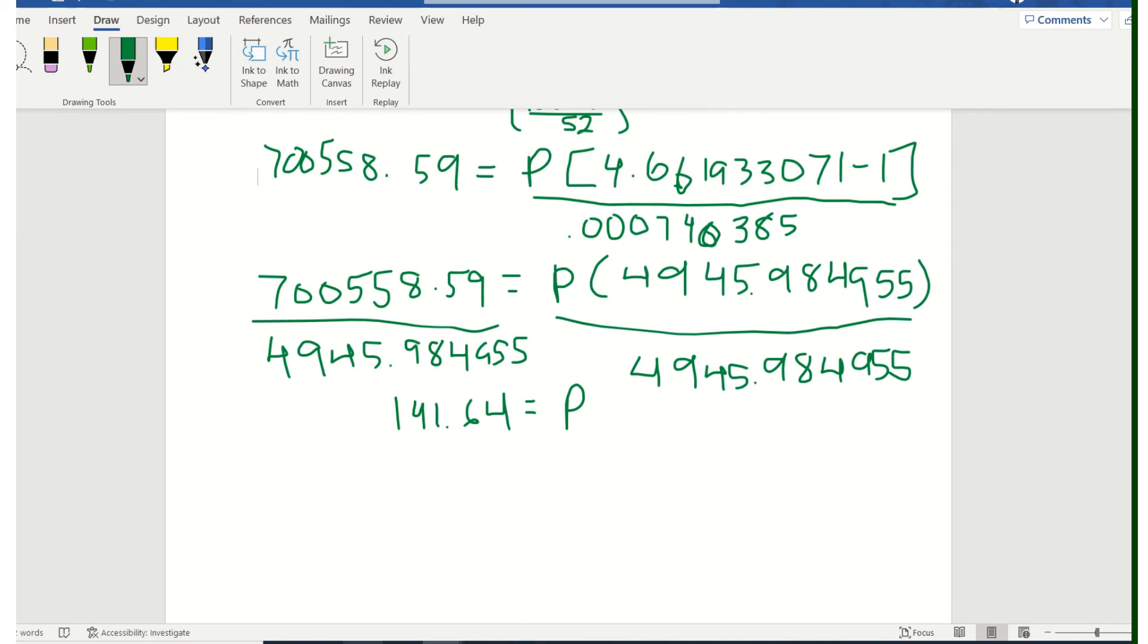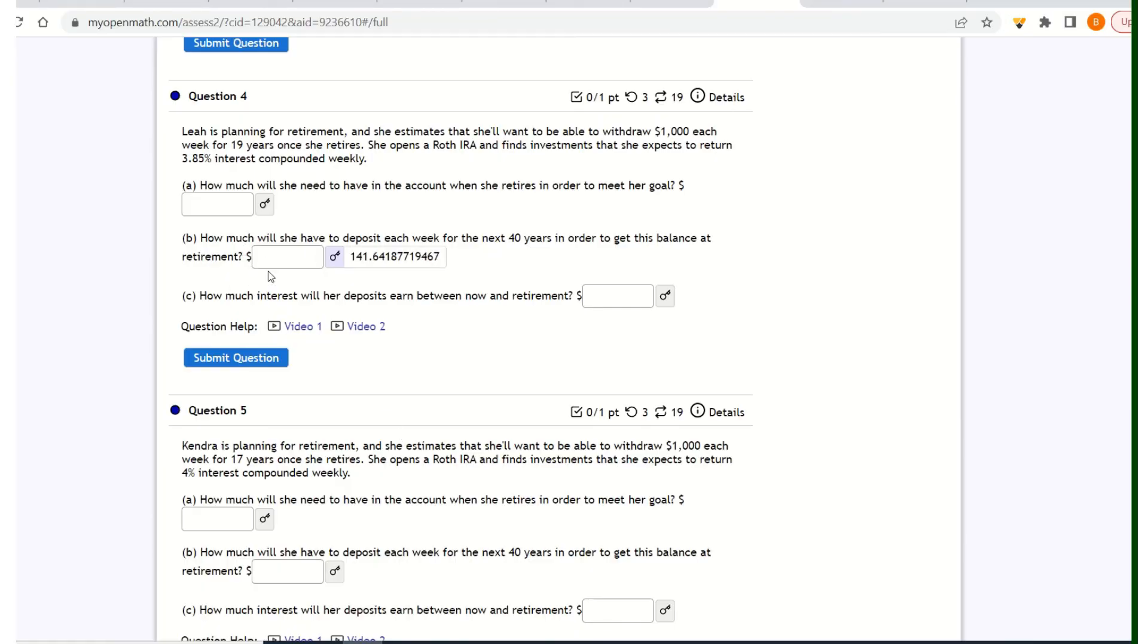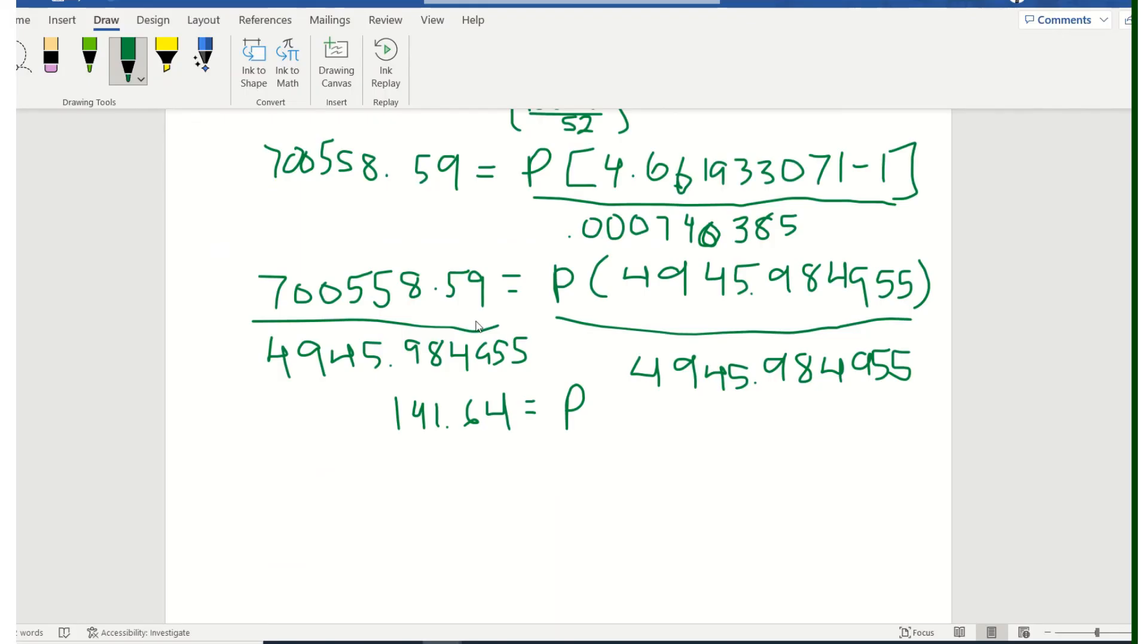So let's go back. Let's see what the last question was. But how much interest will her deposits earn between now and retirement? So what we need to do is figure out what she's actually putting in over that 40 years. And then we know already what she's earning after that 40 years, because that was part of our formula that we did. We know that she's earning this $700,558.59.